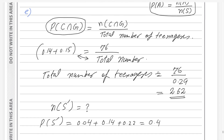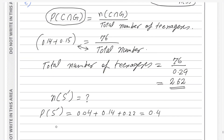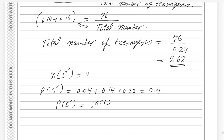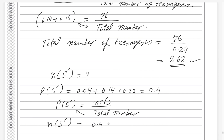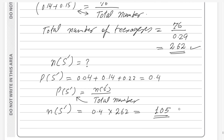Using the basic formula again, number of teenagers not playing scrabble equals the probability (0.4) multiplied by the total (262). The exact answer is 104.8, which rounds up to 105 teenagers who are not playing scrabble.